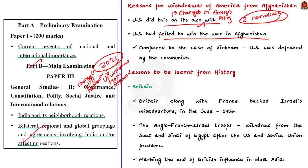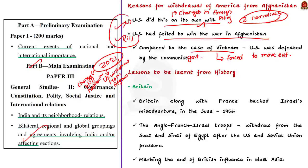The second narrative compares the American withdrawal from Afghanistan to the American withdrawal from Vietnam, where the United States failed to win a war against the communist government and was thus forced to move out. Both these narratives have some merits, so we have to credit them both.